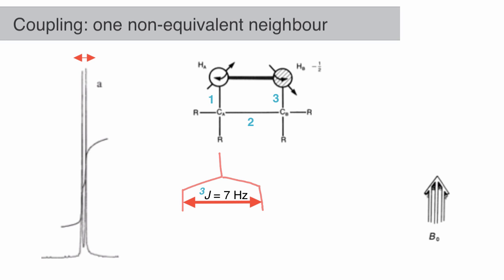Coupling occurs as information is transmitted through bonds. This information can be transmitted through one, two, or three bonds quite readily, called 1J, 2J, or 3J.